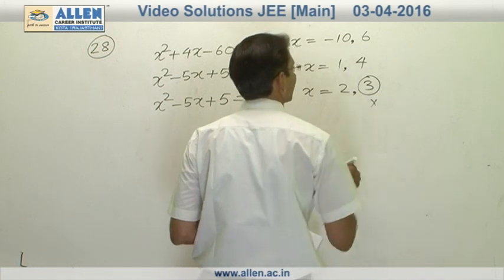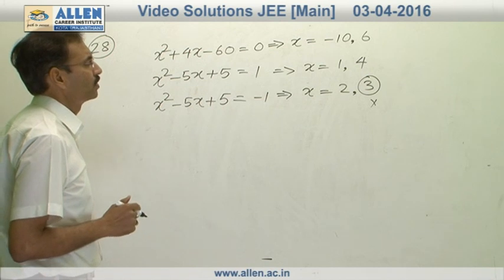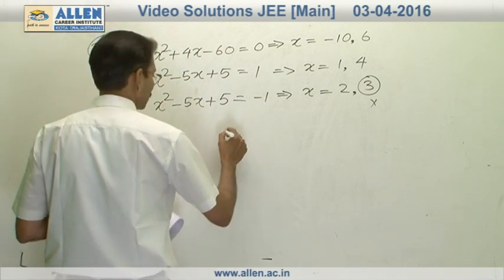We will reject this one and add all these values of x. So the sum comes to be 3. So the right option is 2.